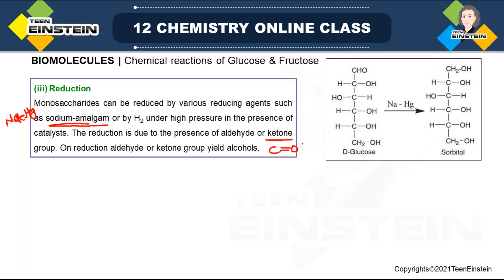For D-glucose in the presence of sodium amalgam, the CHO group is converted to a primary alcohol CH₂OH. Only this part of the molecule changes; the rest of the molecule remains unchanged. So only the aldehyde group is converted to CH₂OH.